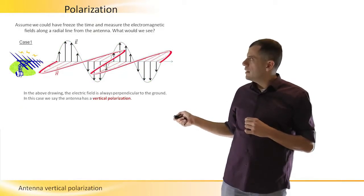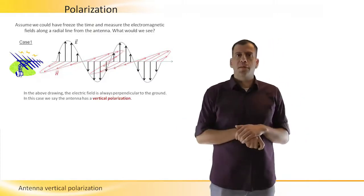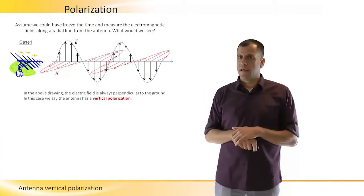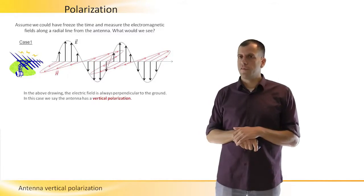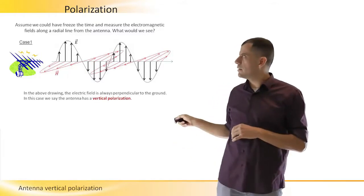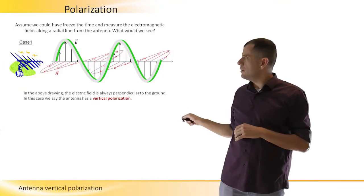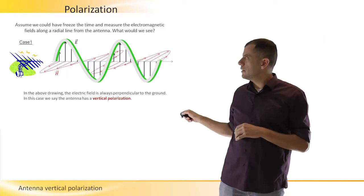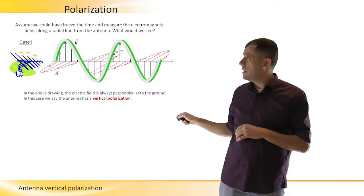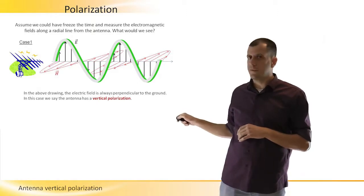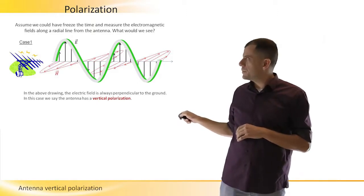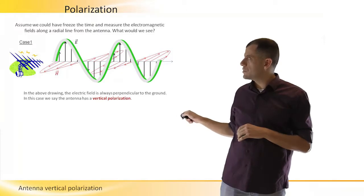And if the electric fields are perpendicular to the ground, then we call this polarization vertical. We see here that all along the line, the direction of the arrows that represent the magnetic fields are perpendicular to the ground. They always stay perpendicular to the ground. They never change.